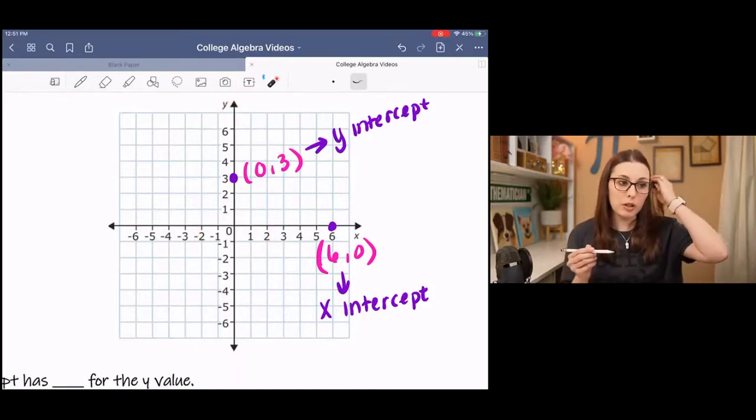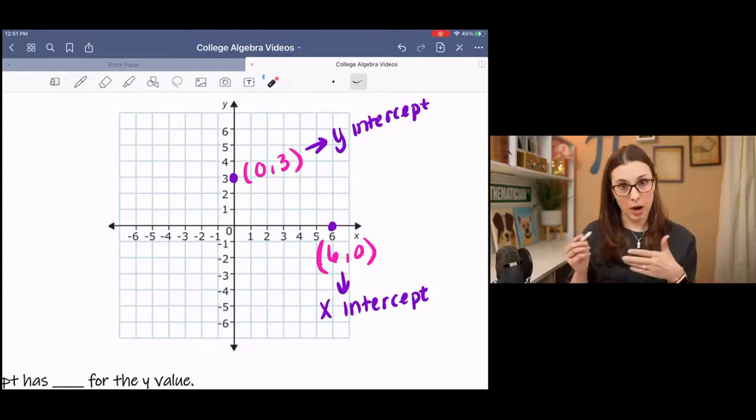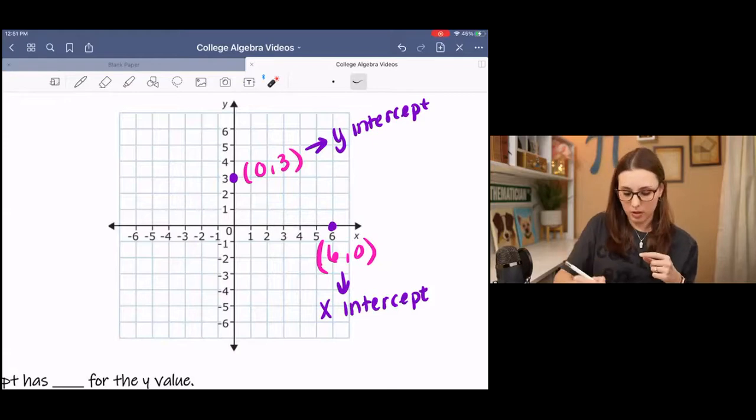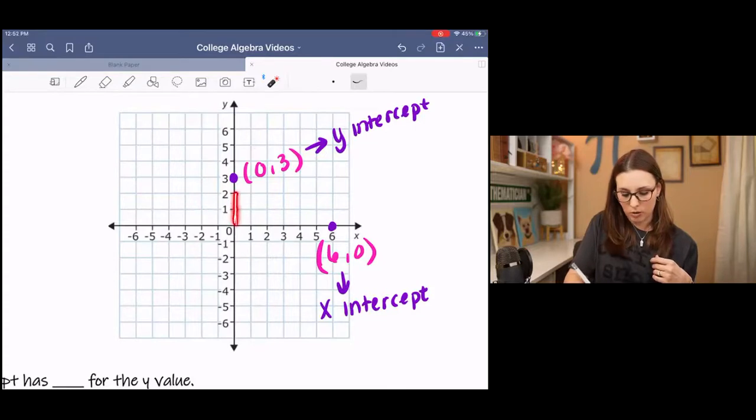Now, depending on the point you picked, your y-value might be different than mine. But one thing remains the same. We all have zero for the x-value because we didn't go left or right. We stayed on the axis. So this would be 0, 1, 0, 2, 0, 3, 0, 4, 0, 5, 0, 6. You get the point.